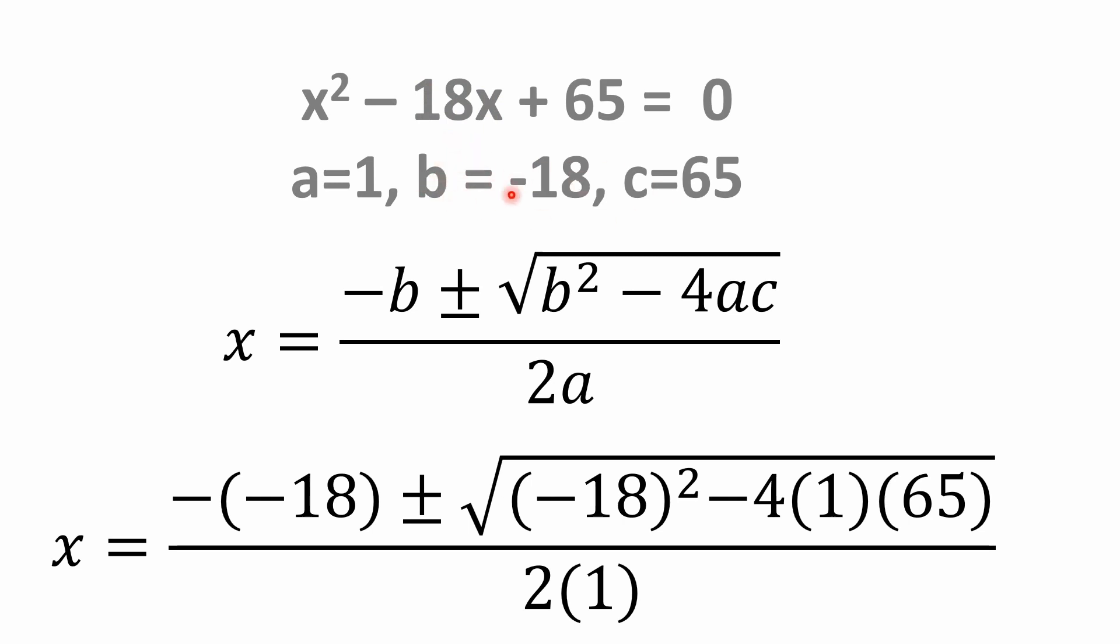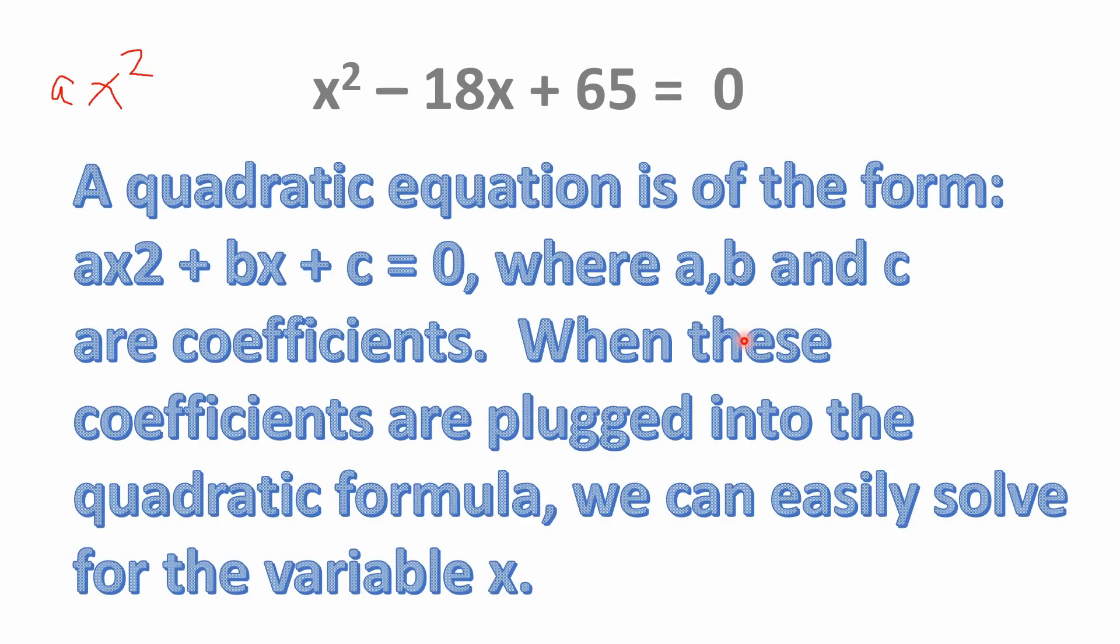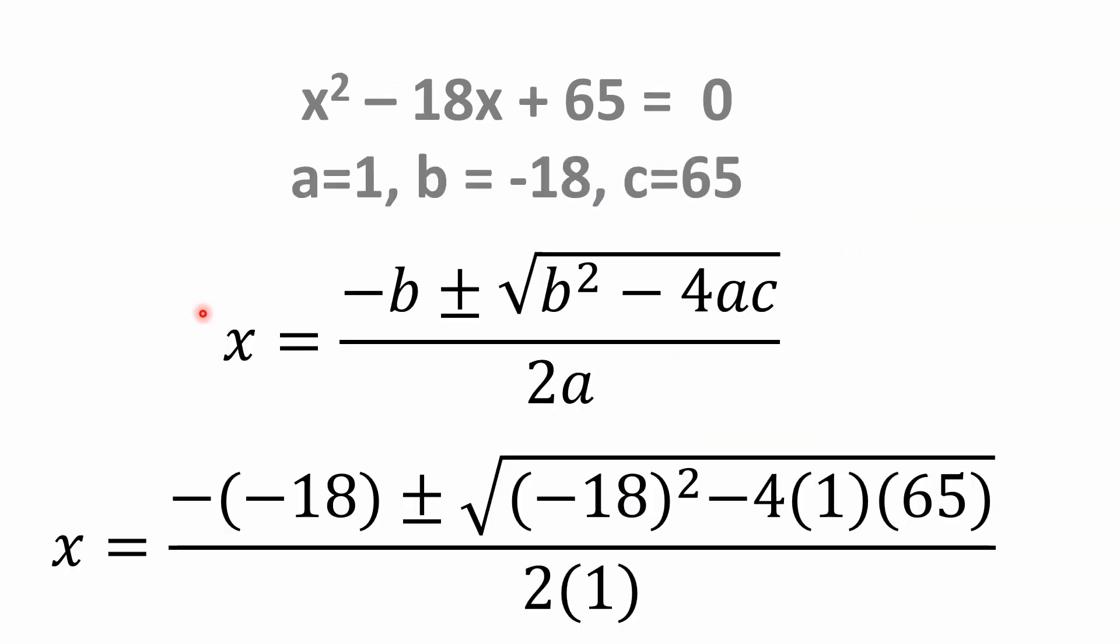And sometimes this confuses people. But if you look again at the form of the quadratic equation, it's supposed to be ax squared plus bx, right? Well, notice that we have a minus sign here. So that means our b is the minus 18. So our c, in this case, is 65, the constant out here. So c is 65.